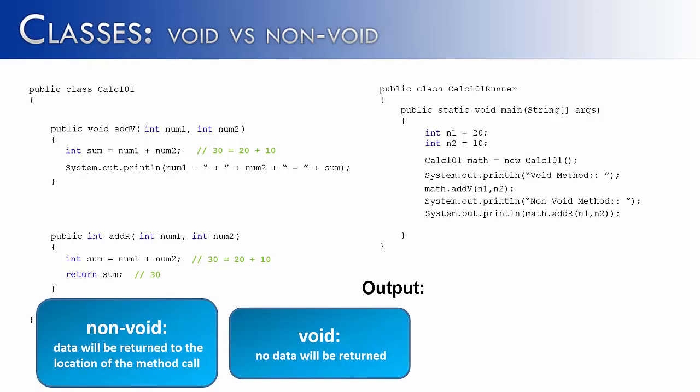In this video, I'd like to show you the difference between a void and a non-void method in terms of calling a method. And in order to do that, I've created two methods, addV and addR. AddV is a void method, and addR is a non-void method. AddV takes two numbers, adds it together,